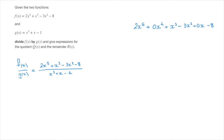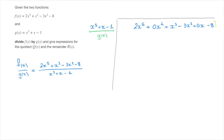I write this in table form, a bit like long division with whole numbers. On the left-hand side I write the expression by which we're dividing, that's g(x) which is x³ + x − 1. The expression on the top row is f(x). The first thing we need to do is find what we need to multiply the leading term of g(x), which is x³, by to get to the leading term of f(x), which is 2x⁵. We'd have to multiply x³ by 2x² to get 2x⁵, so at the top of the table I write 2x².